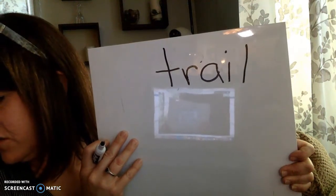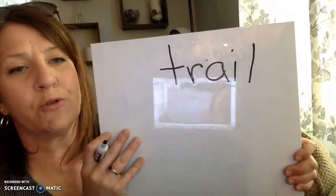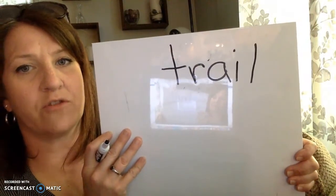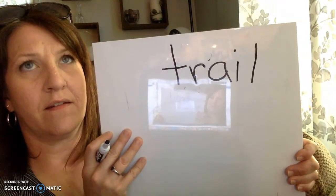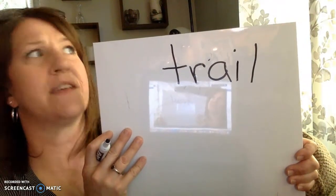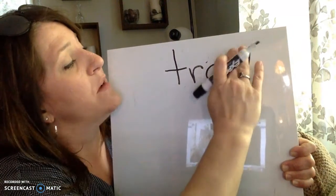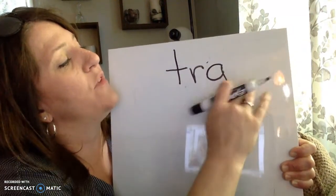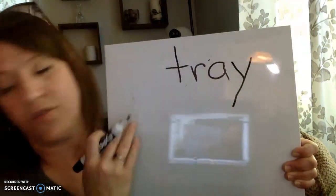All right. Let's change trail into tray. Tray. A is at the end of the word this time. So we're getting rid of A-I and we're moving to A-Y. Tray.